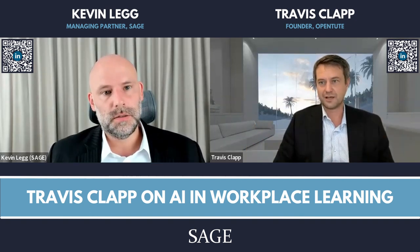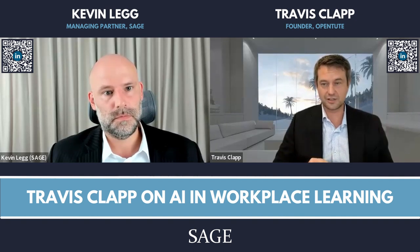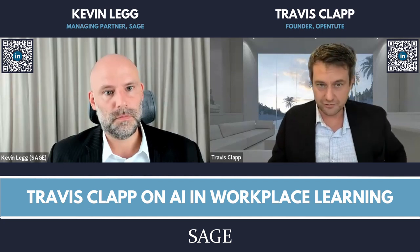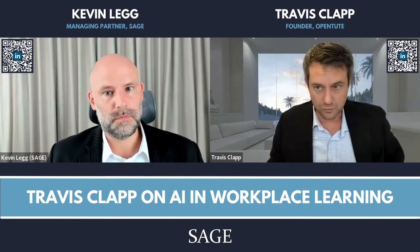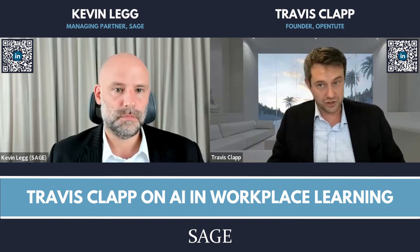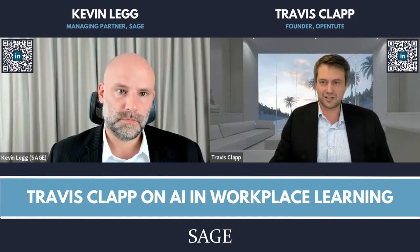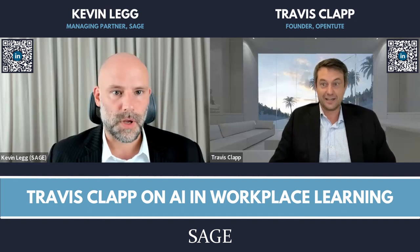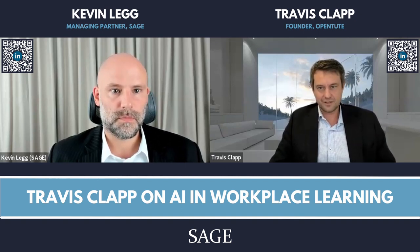Just today I was reading that the EU is threatening to require all sources used to train ChatGPT to be revealed so they can look at plagiarism cases. The founder of OpenAI said they'd just pull out of the EU because that's crazy. It is a big problem, especially with images now.